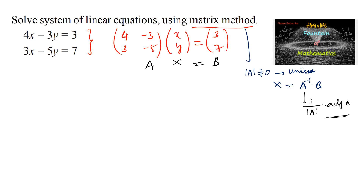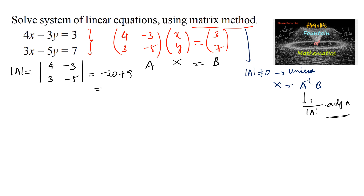Now let's find the determinant of the matrix. The determinant of the matrix with entries 4, negative 3, 3, negative 5 equals 4 times negative 5, which is negative 20, minus 3 times negative 3, which is minus 9, so minus of minus gives plus 9, resulting in negative 11.